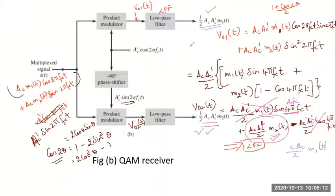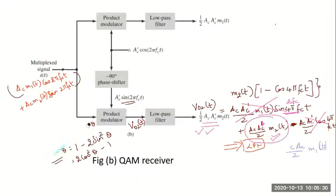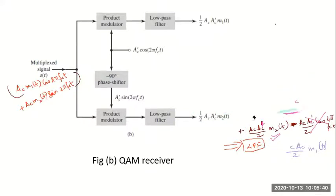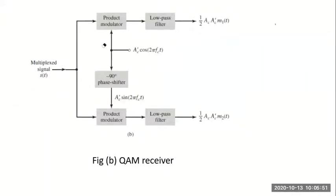We have proved that by multiplexing two signals in the same bandwidth using quadrature carriers — one sine and one cosine — and sending both on the same bandwidth, we are still able to correctly demodulate and recover both signals using two coherent detectors. This is the concept of Quadrature Carrier Multiplexing or Quadrature Amplitude Modulation.